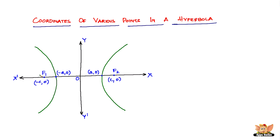The focus on the left side has the coordinate (−c, 0), because it lies on the x-axis in the negative direction. The focus on the right side has the coordinate (c, 0), because it lies on the x-axis in the positive direction.